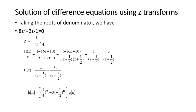Taking the roots of the denominator: 8z squared plus 2z minus 1 equals 0, giving roots z equals 1/4 and z equals minus 1/2. Then H(z) divided by z equals (minus 16z plus 10) divided by 8 times (z minus 1/4)(z plus 1/2), which by partial fractions equals 1 divided by (z minus 1/4) minus 3 divided by (z plus 1/2). Therefore h(n) equals (1/4)^n minus 3 times (minus 1/2)^n, times u(n).